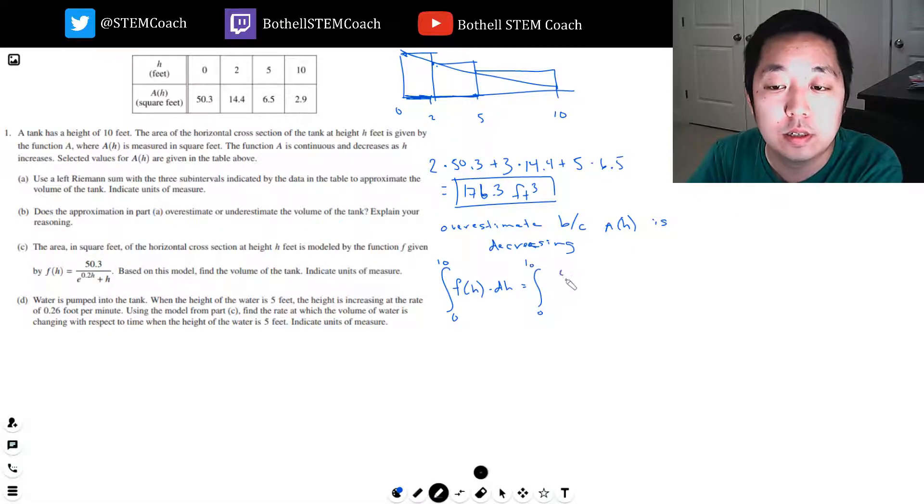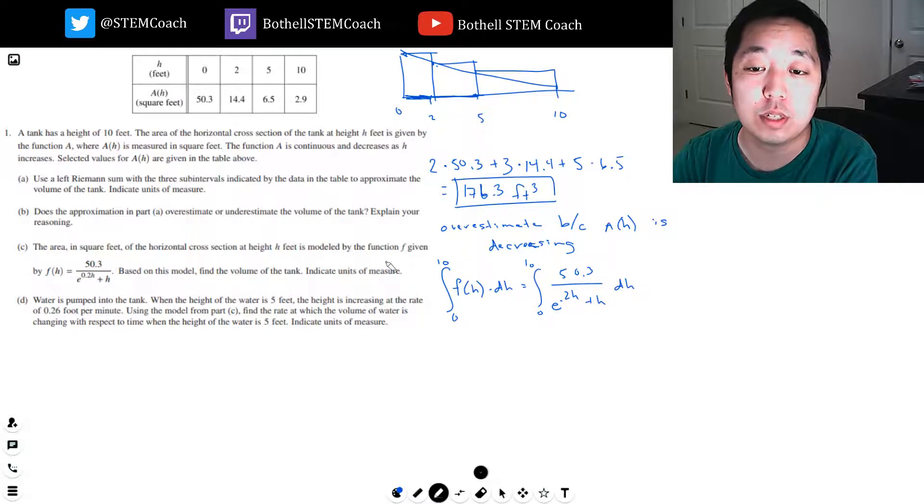0 to 10, 50.3 over E to the 0.2H plus H, DH. Now, you definitely have to use a calculator to do this integral. So I'm going to just do that over here.